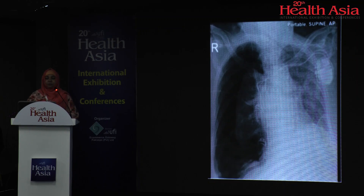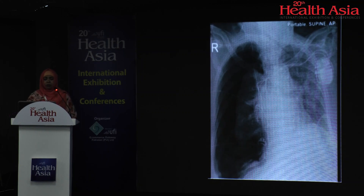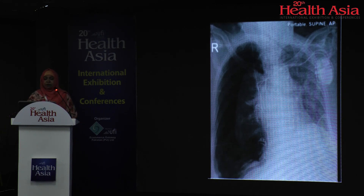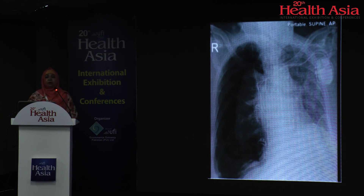Here you can see a chest radiograph with a large hyperlucency in the right hemithorax, the underlying lung is collapsed, there is shift of the mediastinum to the left side, and the diaphragm is depressed. This is very alarming because the mediastinum is shifting toward the contralateral side, creating mass effect and pressure on the heart and major cardiac vessels, which can lead to circulatory collapse and ultimately cardiorespiratory arrest.